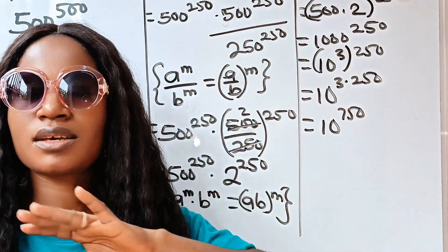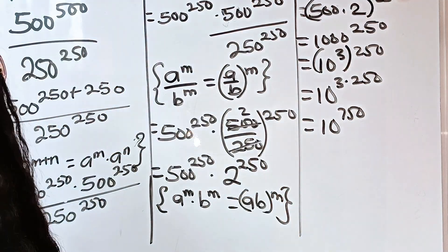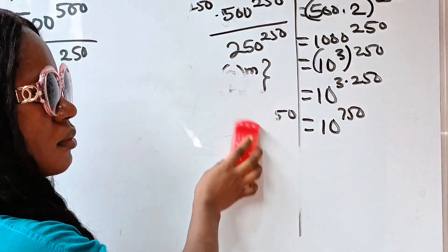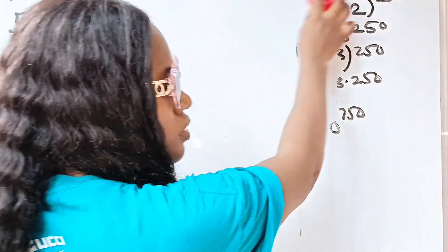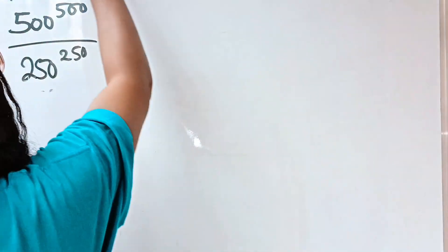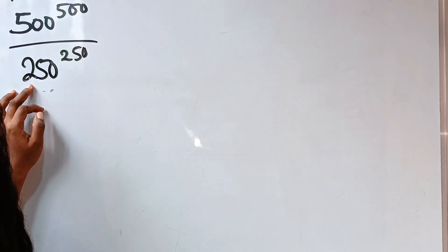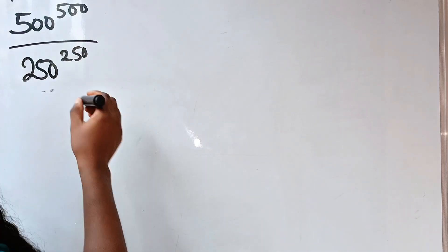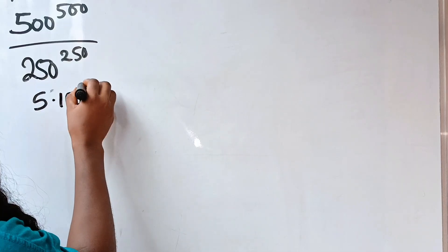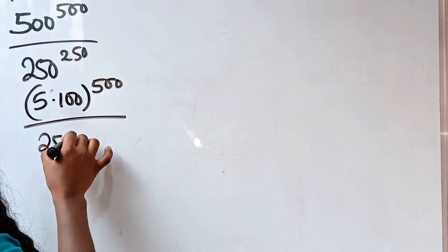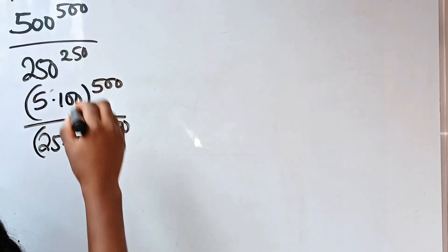Now, the last but not least — and the easiest and fastest of them all — is this particular method. We note that 500 is the same thing as 5 times 100, and 250 is the same thing as 25 times 10. So we replace the expression with (5 × 100)^500 divided by (25 × 10)^250.